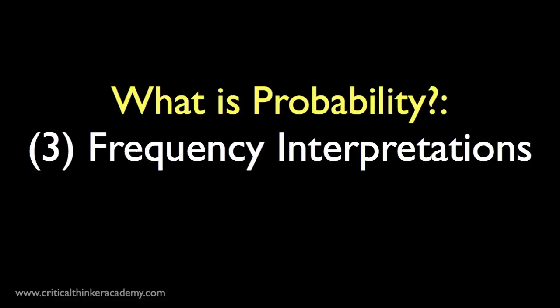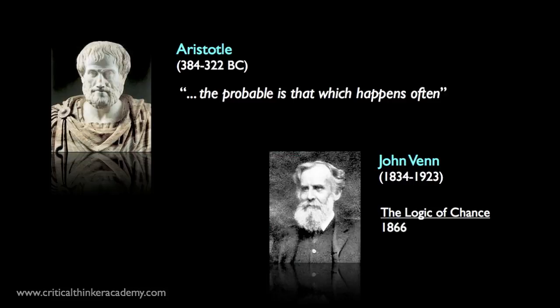The frequency interpretation has a long history. It goes all the way back to Aristotle, who said that the probable is that which happens often. It was elaborated with greater precision by the British logician and philosopher John Venn in his 1866 book, The Logic of Chance.